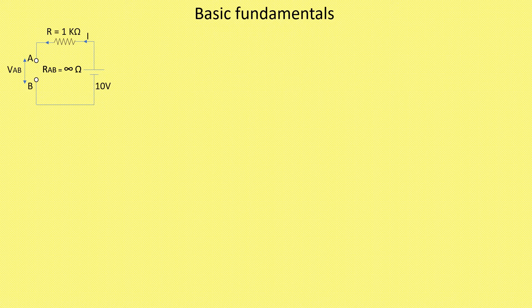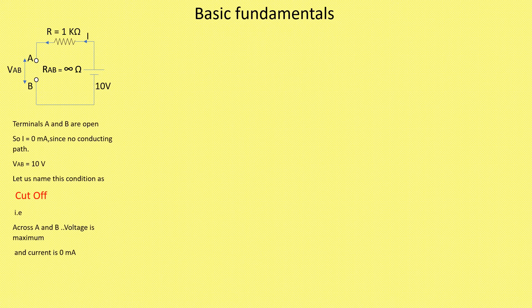So I is equal to zero milliampere. And if I measure the voltage across A and B, that voltage would be equal to 10 volts. So VAB is equal to 10 volts and current is equal to zero milliampere. This particular condition, let us name it as cutoff.